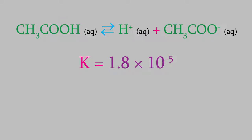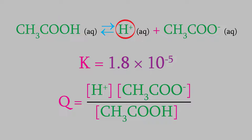But now suppose we add some more H plus ions to the solution. What will happen? If we do that we're adding a product and that means this ratio will increase and it'll become larger than K.